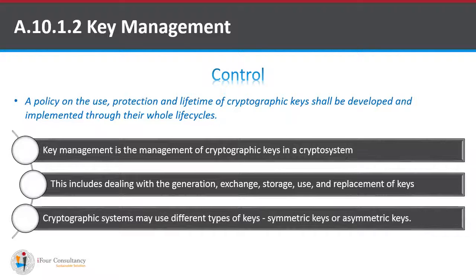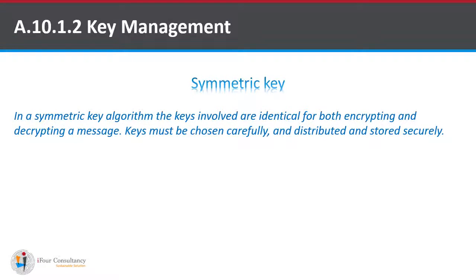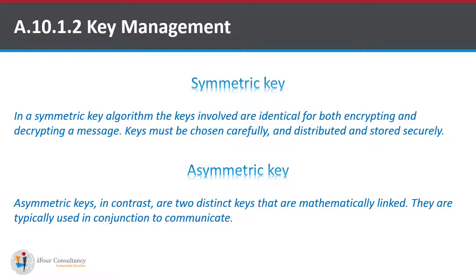The cryptographic system uses different types of keys — it can be asymmetric or symmetric keys. In a symmetric key algorithm, the keys involved are identical for both encrypting and decrypting a message; keys must be chosen carefully and distributed and stored securely. Asymmetric keys, in contrast, are two distinct keys that are mathematically linked and are typically used in conjunction to communicate.